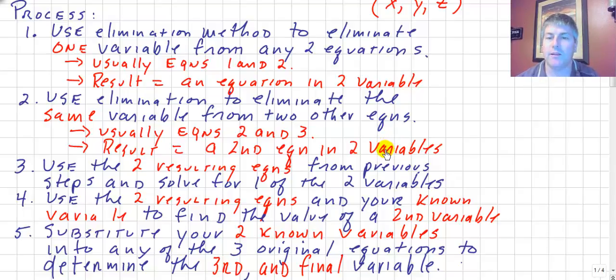If we're good at the elimination method, we'll use these two resulting equations, and we will solve those for one of the two variables, just like we've done using substitution or elimination, usually elimination. Then, we will use those two equations to find the second variable. After step three, or after step four, you will have found two of the variables.